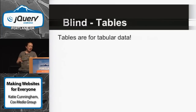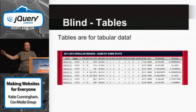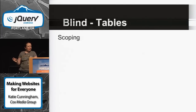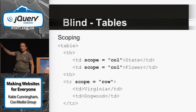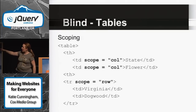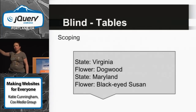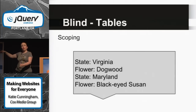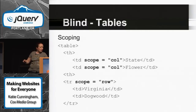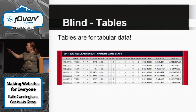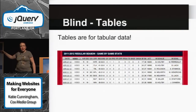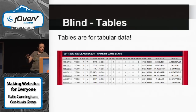Tables are for tabular data — if you'd want to put it in an Excel sheet and sort it, then you can put it in a table. You want to scope them: for every column header, you say these are my columns; for every row, you say this is a row. Then it's read out like: the column, the content, the column, the content, and 'new row.' If you have a complex table, you'd get lost very easily without scoping. It doesn't take that long.